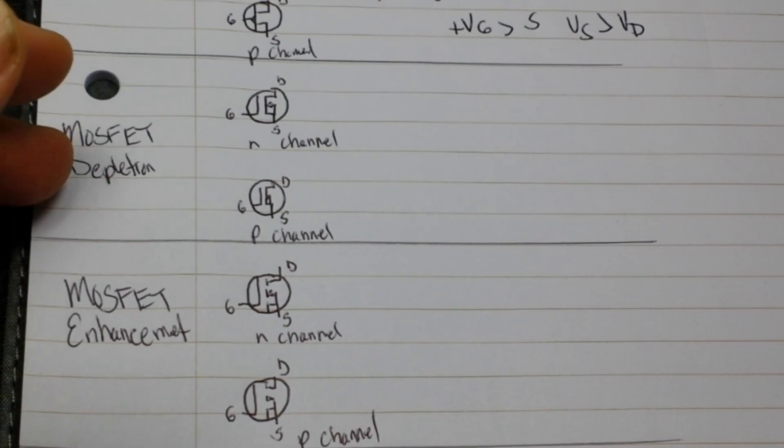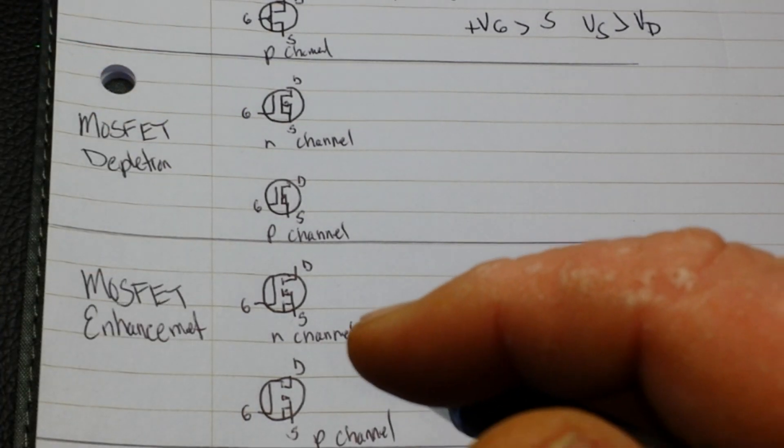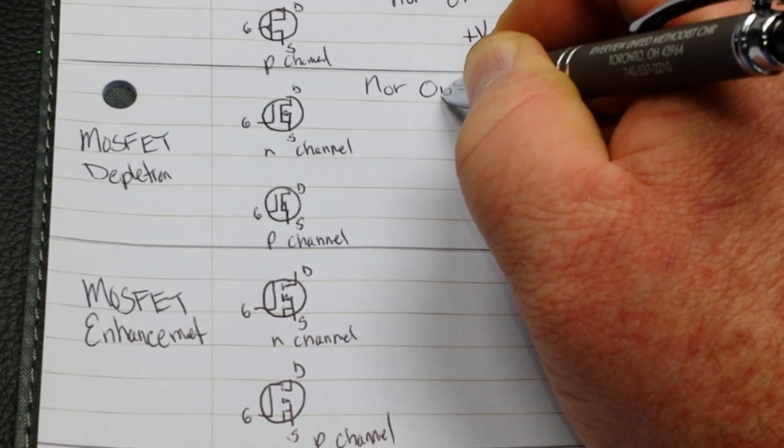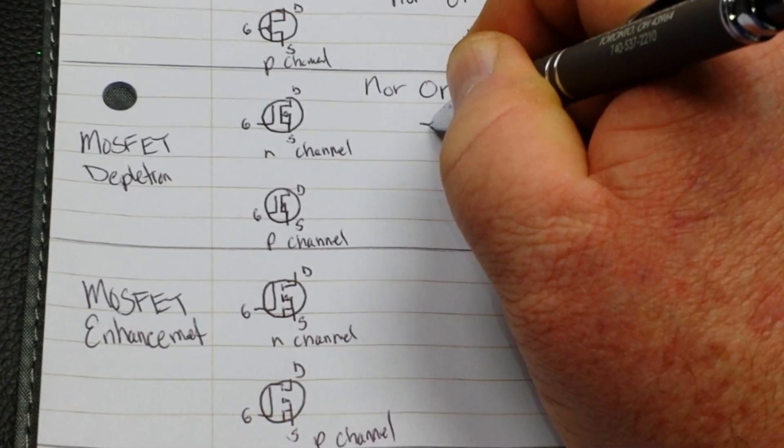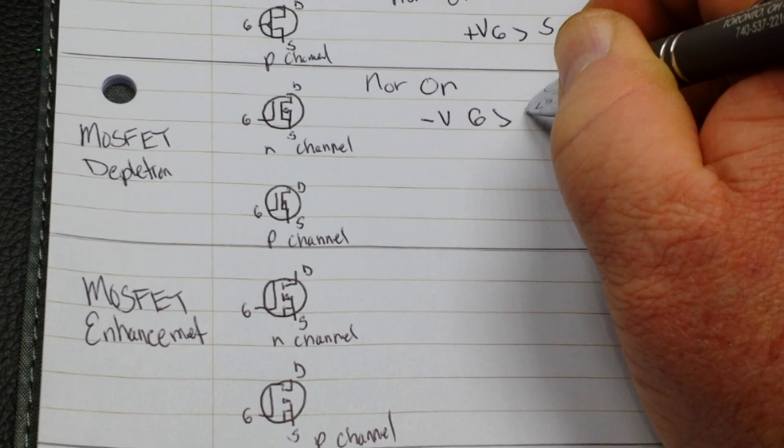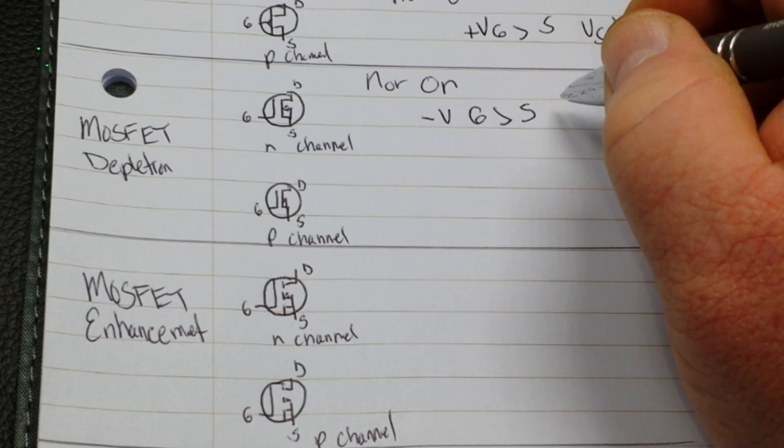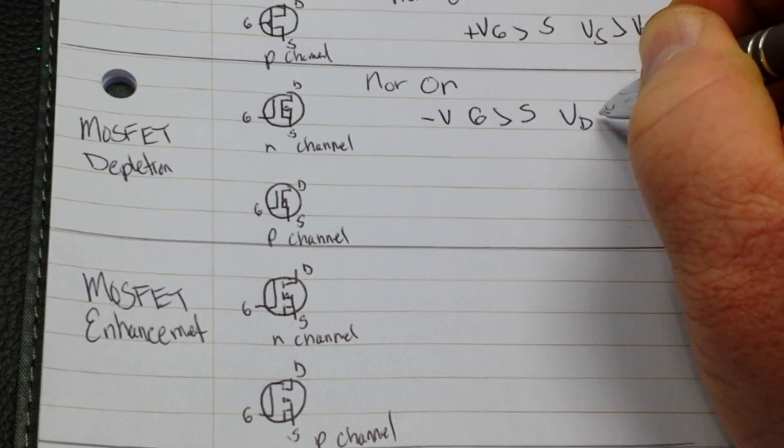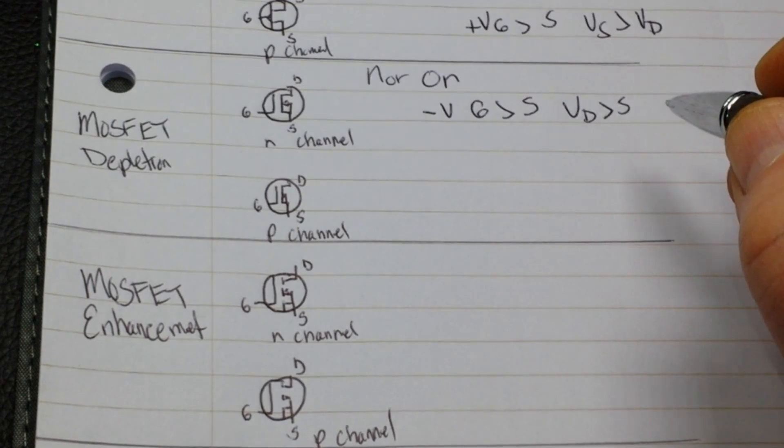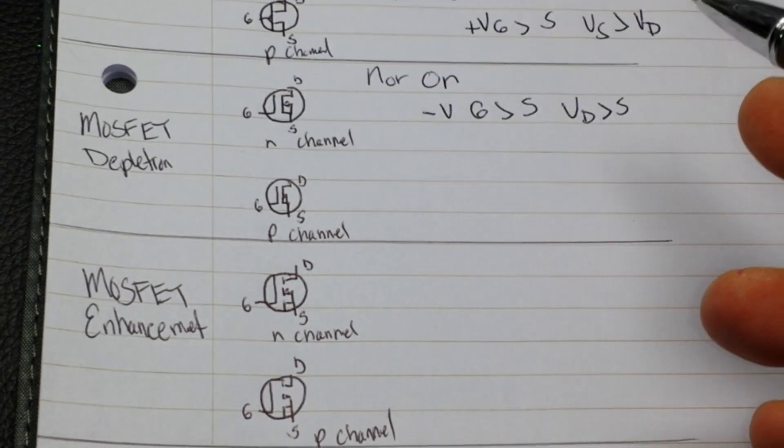Let's move on to our MOSFETs. We have depletion mode and enhancement mode, N channel and P channel for both of them. So, let's start with the depletion mode, N channel. It is normally on. But a small negative voltage at its gate relative to the source will shut it off. And it operates VD is greater than VS. Now, what's nice about this is it does not require a gate current. MOSFET. And again, used in switching and amplification.